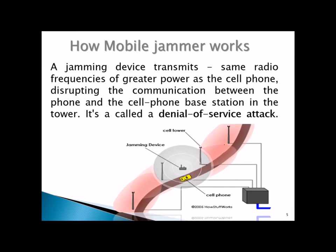How does it work? A jamming device transmits on the same radio frequencies as the target, but with greater power. If this is a cell phone and this is a cell tower, and there is a jamming device in between, the jamming device sends the same frequency with extra power, disrupting the communication between the phone and the cell phone base station.